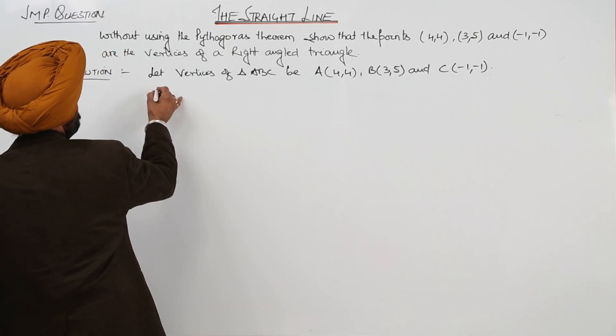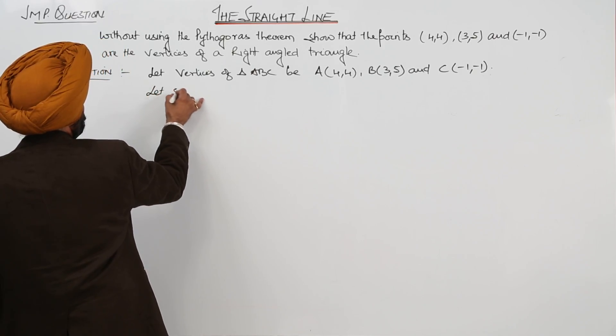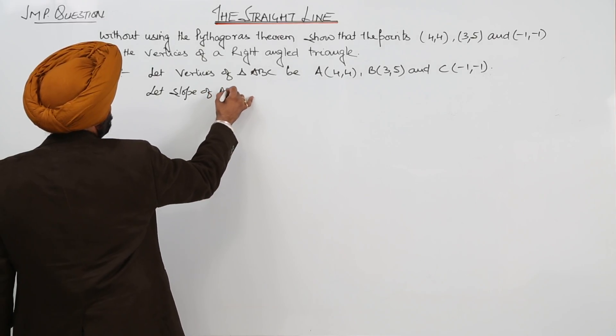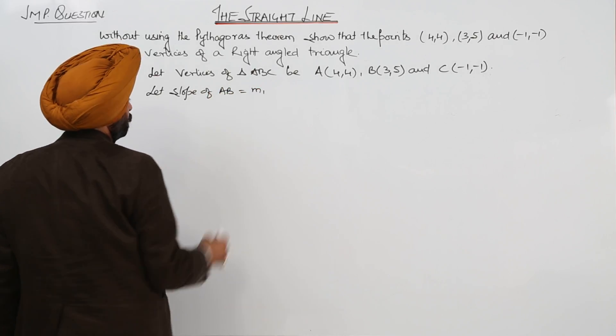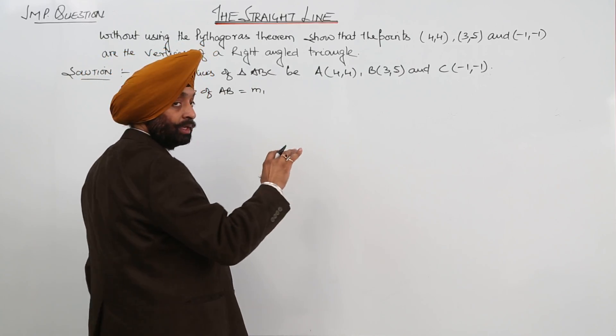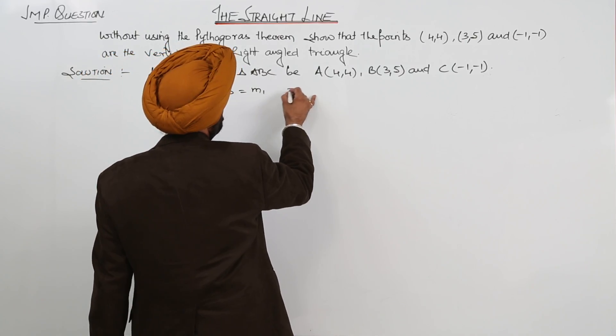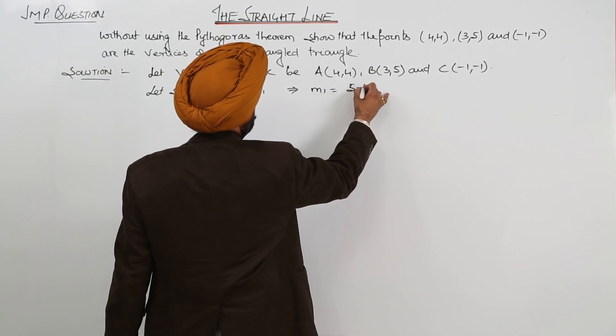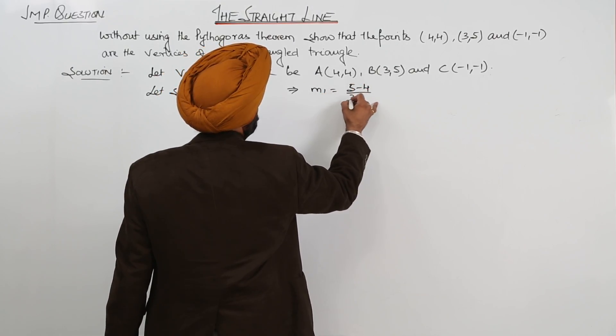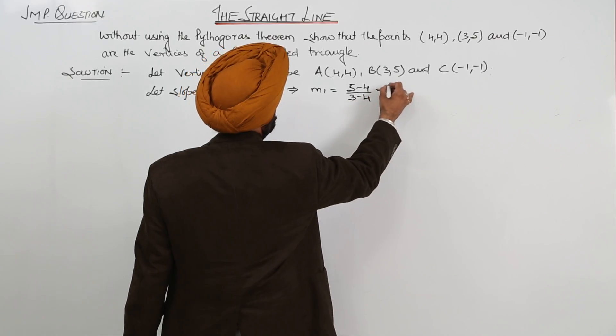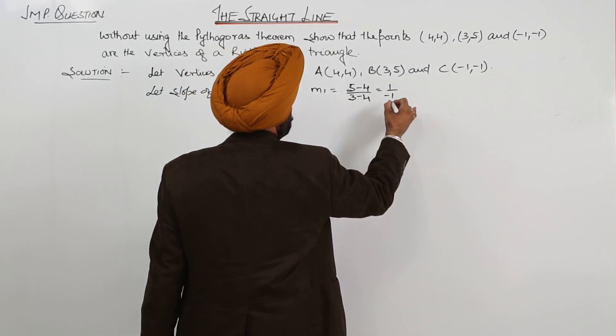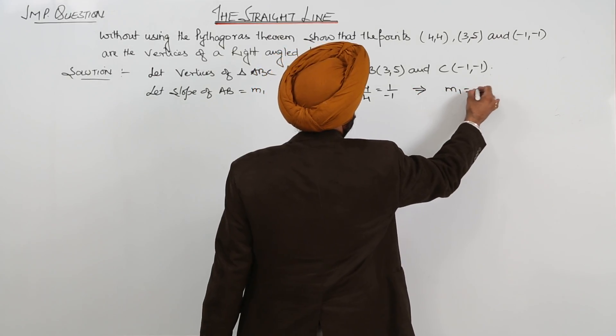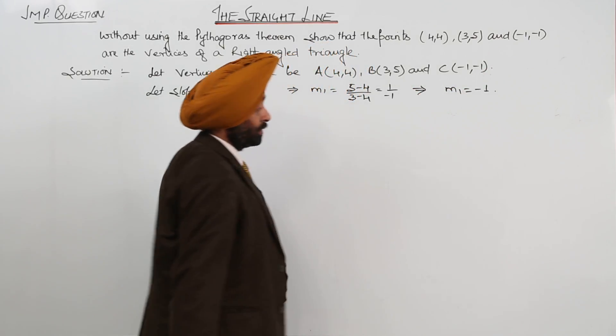Now, let slope of AB equal M1. So M1 equals 5 minus 4 upon 3 minus 4. This is equal to 1 upon negative 1. This gives M1 equals negative 1.